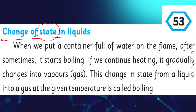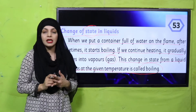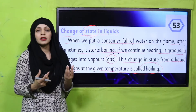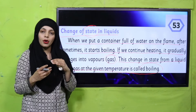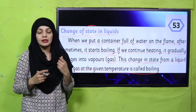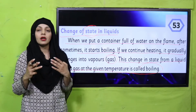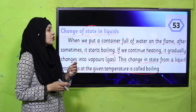Liquid bhi apni state change karte hain. When we put a container full of water on a flame, after some time it starts boiling. If we continue heating it, it gradually changes into vapor, that is gas. This change in state from a liquid into gas at a given temperature is called boiling. So boiling ki example: the change of state of a liquid into a gas at a given temperature is called boiling.